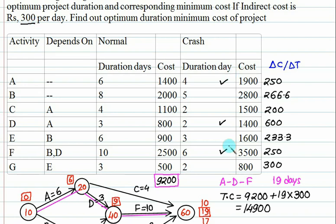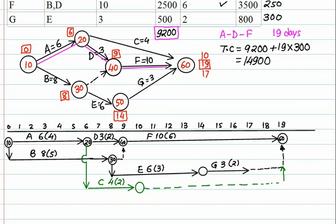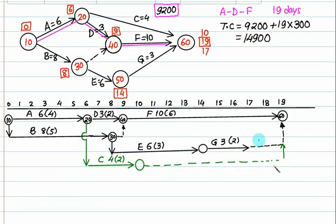Out of the critical activities, you can select either A or F, but there is no benefit in selecting the one with a crash cost slope of 600. So we have a preference for either A or F. The crash cost for A and F is the same — both are 250 — so you will benefit by 50 rupees per day relative to the overhead. We will crash activity F. You can crash it by a maximum of 4 days since the minimum duration is 6 days, but right now we will crash it by 2 days.